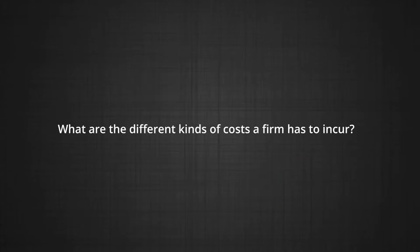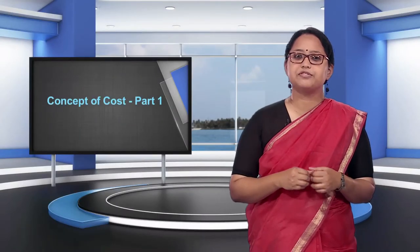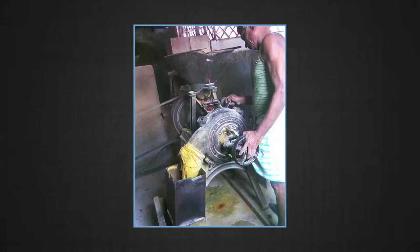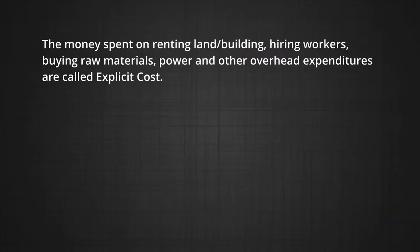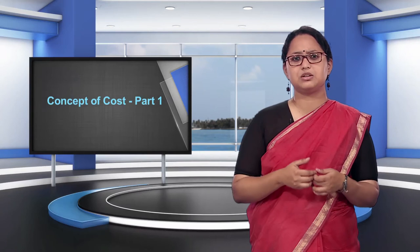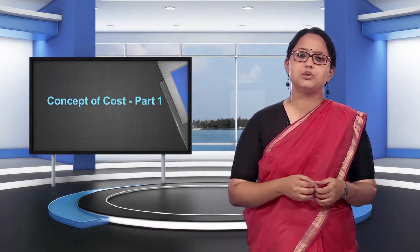But what are the different kinds of costs a firm has to incur? Let us take another example. Suppose a farmer decides to become a flour mill owner. She will need a machine to turn the wheat into flour, a building to store all the wheat which is the raw material, as well as electricity and workers to manage the mill. These inputs were bought by the mill owner through money and these are called the explicit costs.